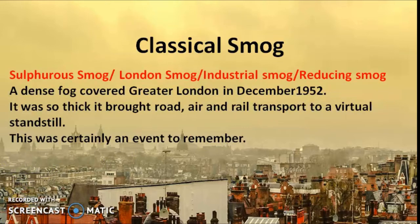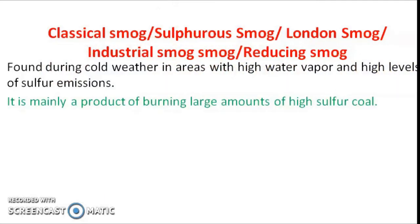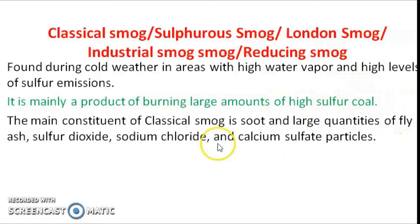Classical smog is usually found during cold weather along with high water vapour and high levels of sulphur emissions. When these three conditions come together, classical smog can be observed. This is why we hear about smog forming during winter in December–January in Delhi. It is mainly caused by the burning of large amounts of sulphur-containing coal or fuel. The main constituents are soot along with fly ash, sulphur dioxide, sodium chloride, and calcium sulphate particles.